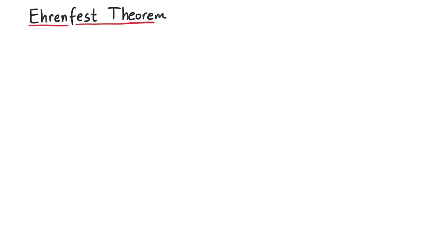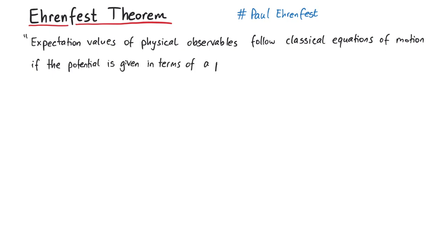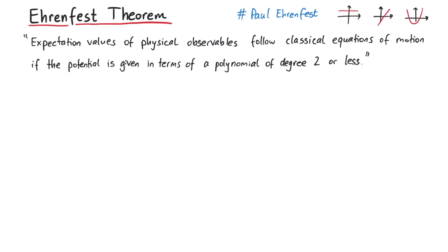In this video, we will investigate the Ehrenfest theorem, named after the Austrian physicist Paul Ehrenfest. It states that the expectation values of physical observables follow classical equations of motion, if the potential is given in terms of a polynomial of degree 2 or less — meaning either flat, linear, or parabolic. This is a very important statement connecting quantum mechanics and classical mechanics.